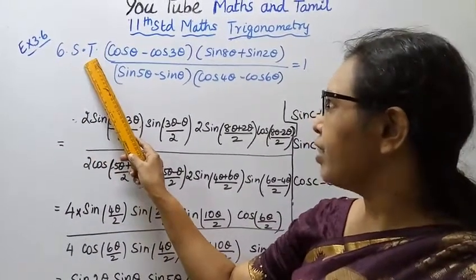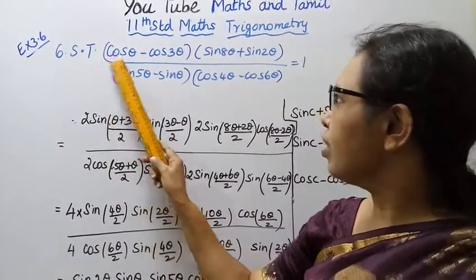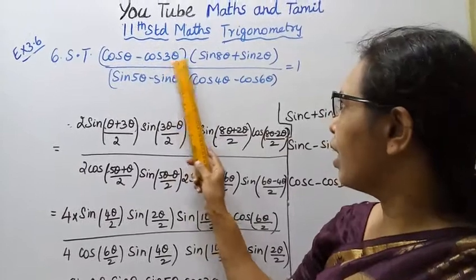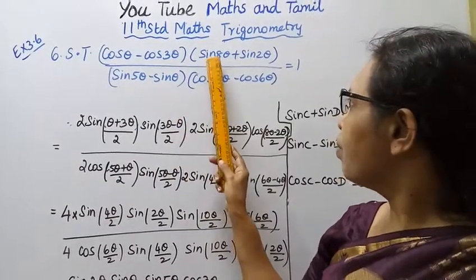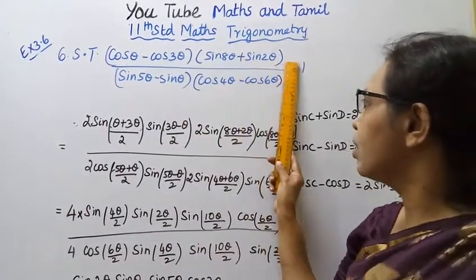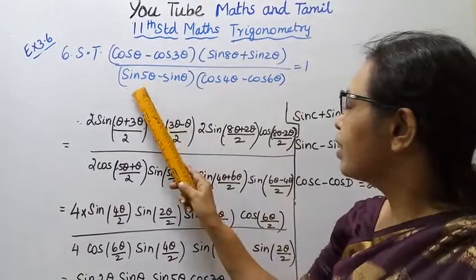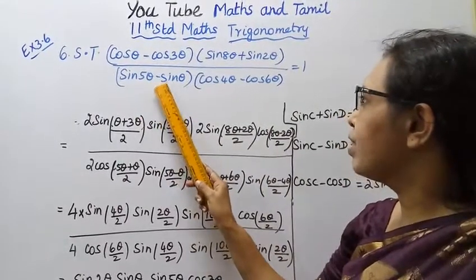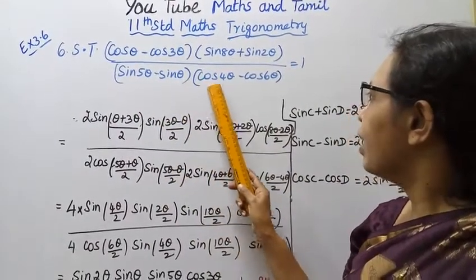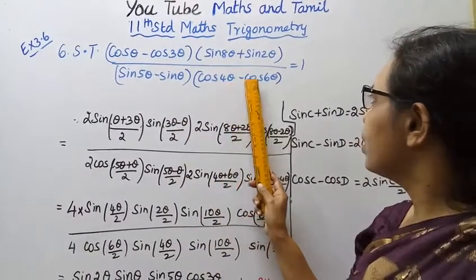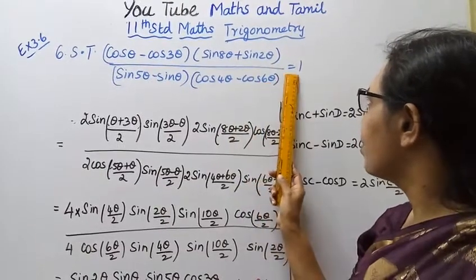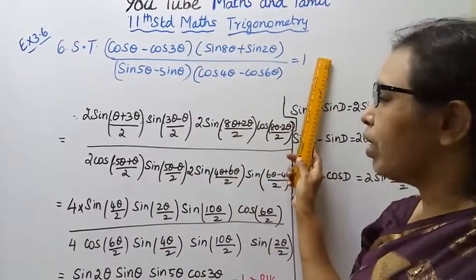Show that (cos theta minus cos 3 theta)(sin 8 theta plus sin 2 theta) divided by (sin 5 theta minus sin theta)(cos 4 theta minus cos 6 theta) equals 1. Let's prove it.